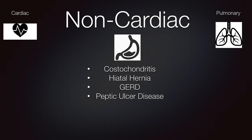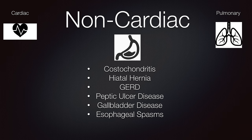Peptic ulcer disease: patients typically come in complaining of epigastric pain that's worse after a few hours after eating. Gallbladder disease: patients often present with right upper quadrant pain, sometimes with referred pain going up to the right shoulder. Esophageal spasms can mimic chest pain and be induced by cold liquids. Oftentimes they can be relieved by nitroglycerin pills and they present similarly to angina. A gastroenterologist will use esophageal manometry to assess if the patient has esophageal spasms.